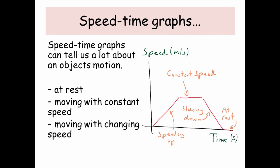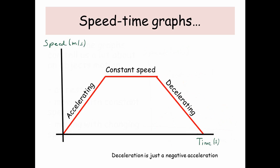Here in our little sketched graph, I've got speed on the y-axis and time on the x-axis. You can see whatever our object is, it's speeding up, then going at a constant speed, then slowing down, and then at rest. Instead of saying speeding up, we call that accelerating, and slowing down we call decelerating. Deceleration is just a negative acceleration.